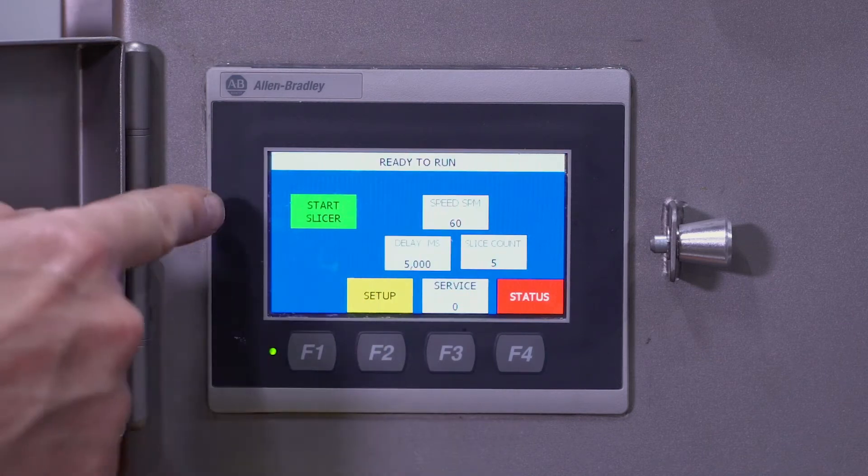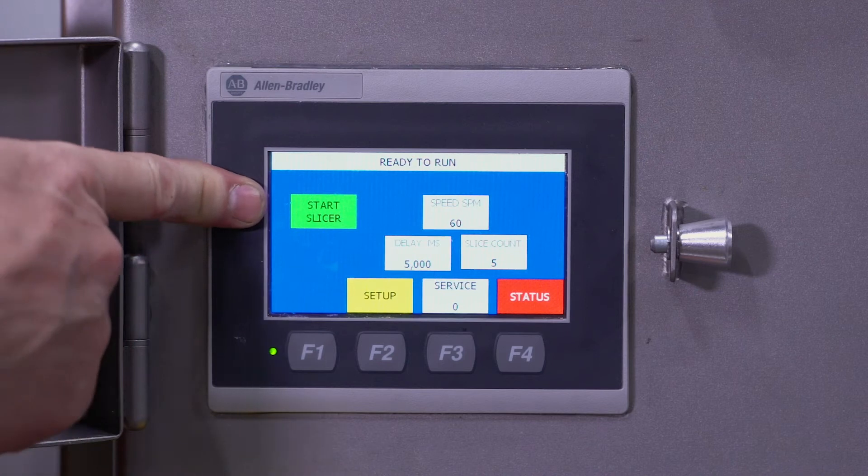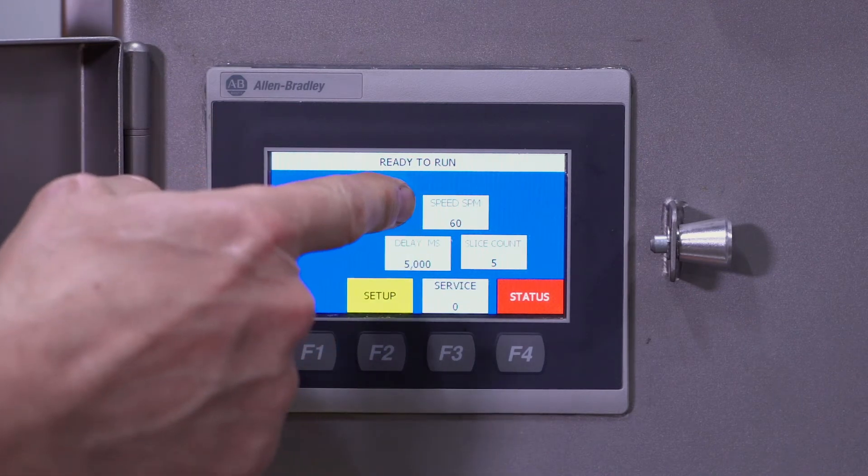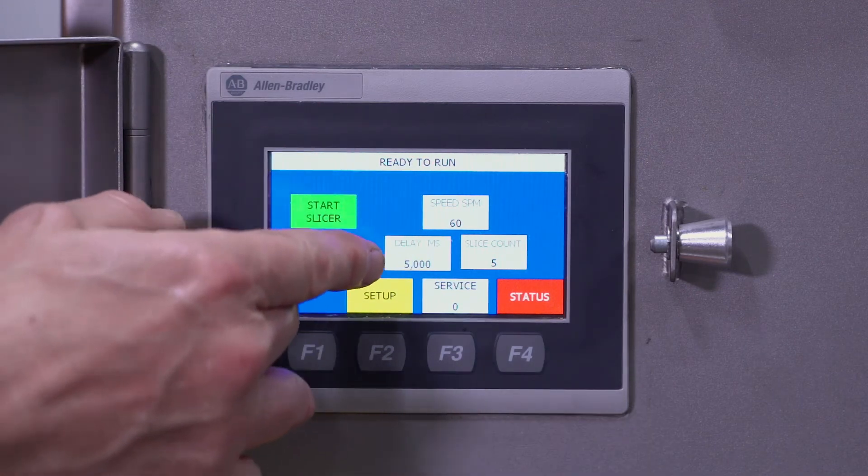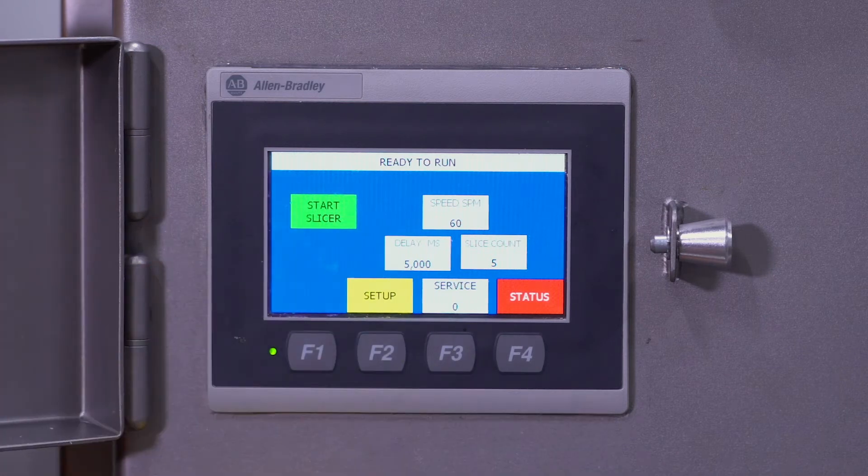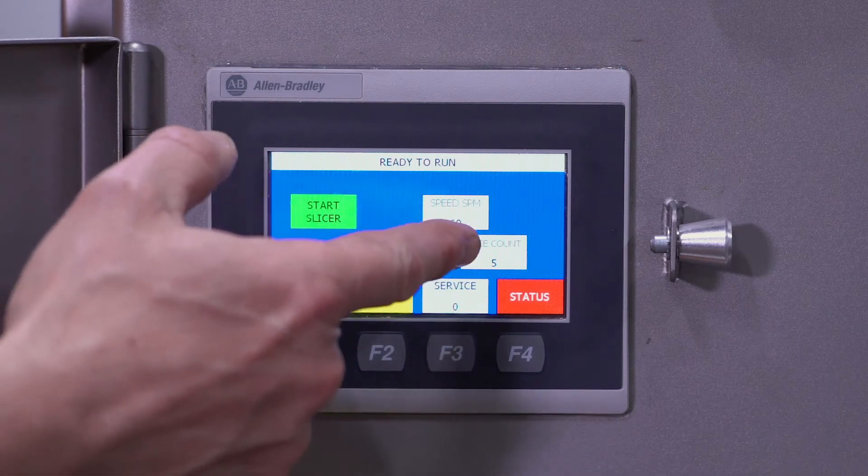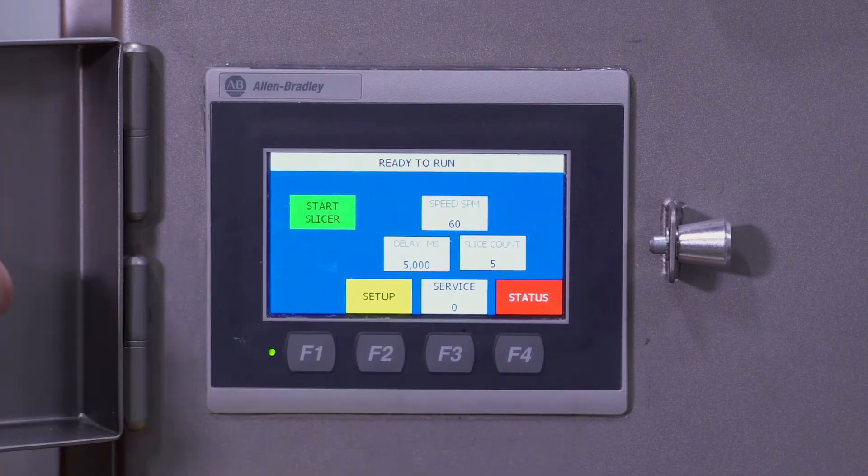Back to the main screen, you have the start slicer button, turns the machine on and off. You have the stroke speed, tells you how fast you're cutting per minute. You have the delay, which helps you set up your conveyor times and your group times. And you have the slice count, which tells you how many pieces you're putting out.